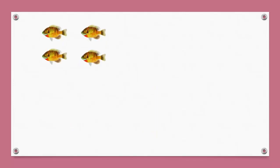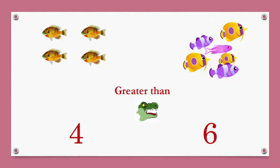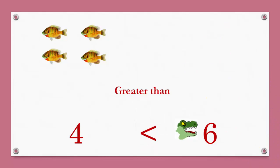Let's feed Mr. Crocodile more fishes: 1, 2, 3, 4, 5, 6. On the left hand side there are 4 fishes and on the right hand side there are 6 fishes. Here we will use the greater than sign. Mr. Crocodile is going to eat the more fishes, so he opens his mouth to the 6 number. He is going to eat them again.